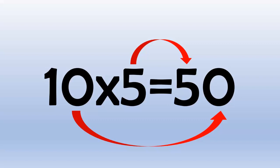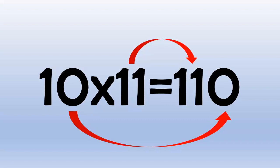10 times 10 equals 100 because 10 with a 0 on the end equals 100. 10 times 11 equals 110 because 11 with a 0 on the end is 110. 10 times 12 equals 120 because 12 with a 0 on the end is 120.